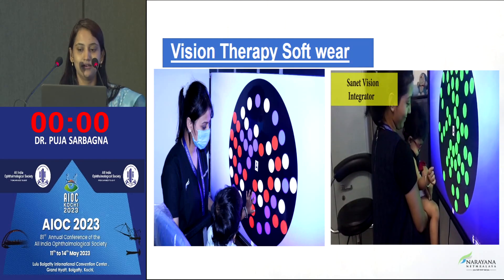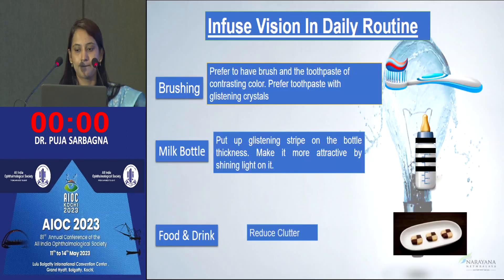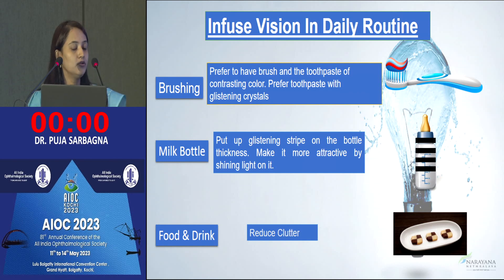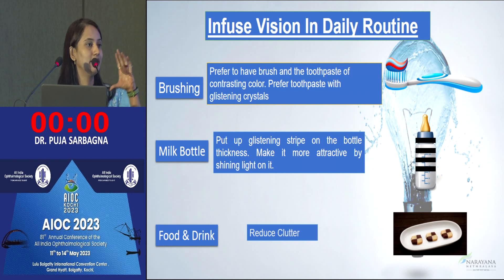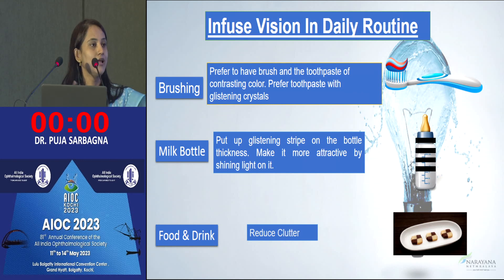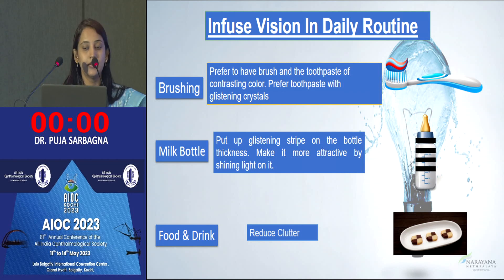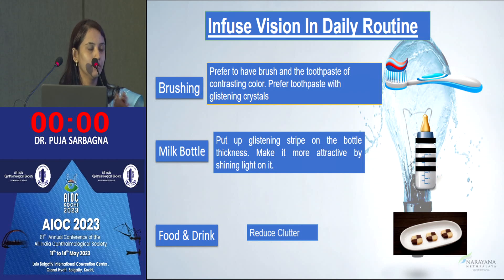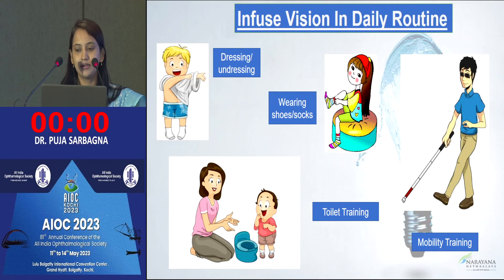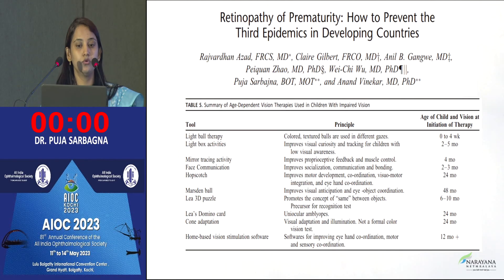For daily living activities, we advise modifications such as: wrapping the milk bottle with colorful tapes and shining a torch on it to attract the child to hold it during feeding; using colorful toothpaste and a torch during brushing to engage interest; using a black plate with brightly colored fruits like apple, giving one at a time so the child stays interested. We also address dressing, wearing shoes and socks, toilet training, and mobility training. Our practice follows the protocol from a paper by Dr. Rajvardhan Azad for treating children with cortical visual impairment.